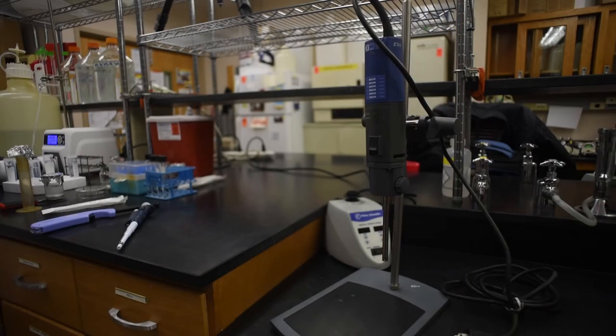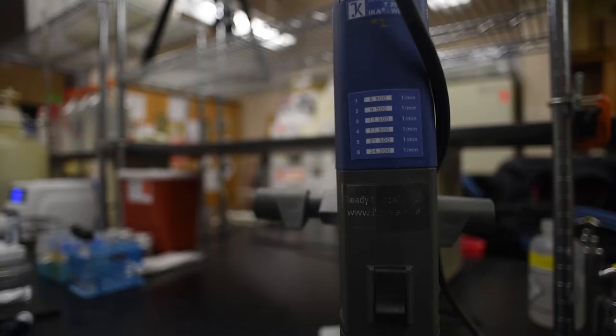To disaggregate the biofilm, use a homogenizer set at 20,500 RPM, plus or minus 5,000 RPM. The settings are shown here.